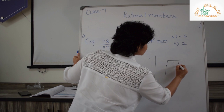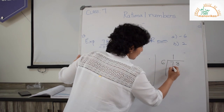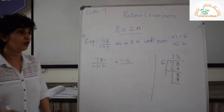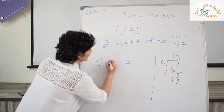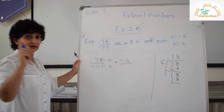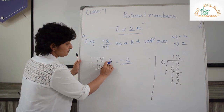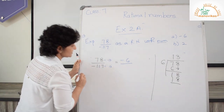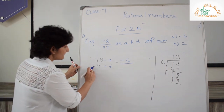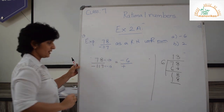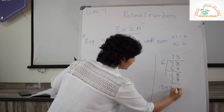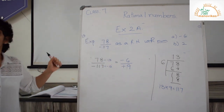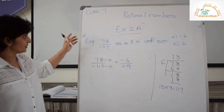Let's divide 78 by 6. Going to the rough column: 6 ones are 6, bring 8 down, 6 threes are 18, so the quotient is 13. If I use 13 here, I need to put 13 in the denominator. Now looking at signs: there is a minus in the numerator. Plus and minus gives minus, so I put minus 13. Then minus divided by minus gives plus, and 13 multiplied by 9 is 117. So the denominator is 9. So 78 upon minus 117 equals minus 6 upon 9.